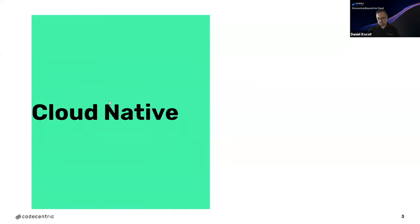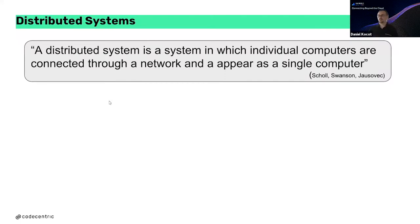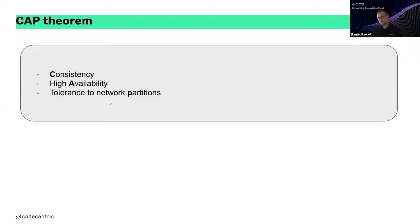What is cloud native? Cloud native is about distributed systems. When we look at the literature, from Shaw, Swenson, and Janovitch, a distributed system is a system in which individual computers are connected through a network and appear as a single computer — totally simple. Going further, we enter the CAP theorem, which is about consistency, high availability, and tolerance to network partitions — the distributed systems fundamentals.